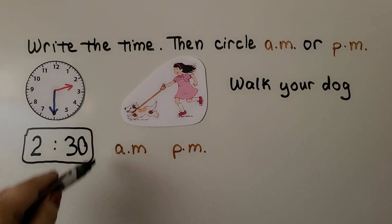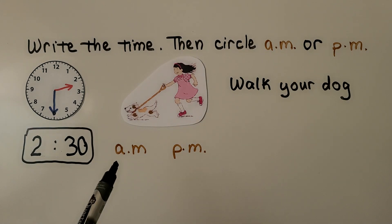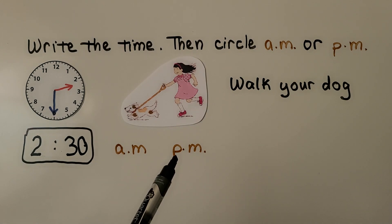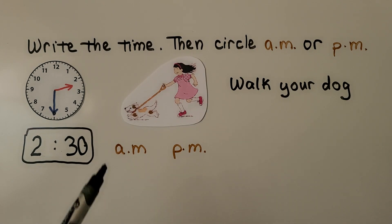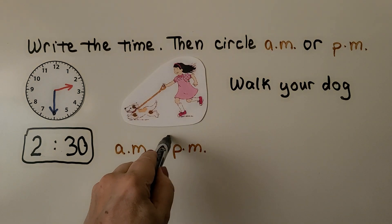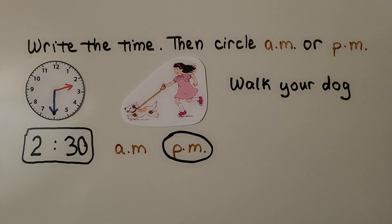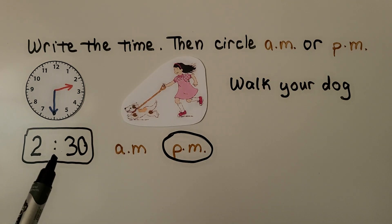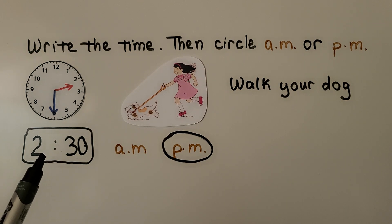Would it make sense to walk your dog at 2:30 AM or 2:30 PM? If you said PM, you're right. That would be 2:30 in the afternoon — it would still be daylight out, right before dinner. 2:30 AM would be too early in the morning; you wouldn't be awake yet.